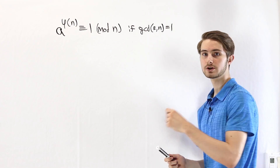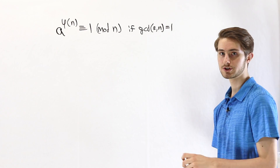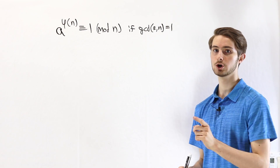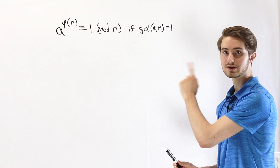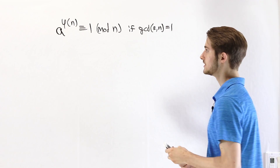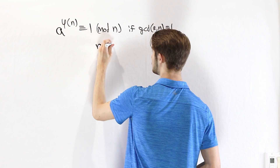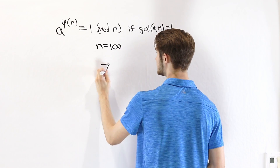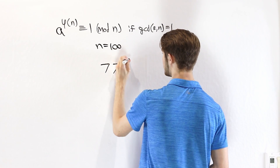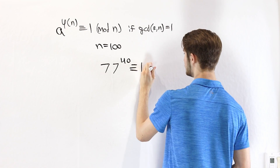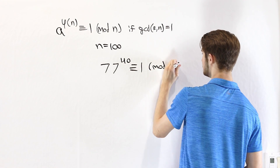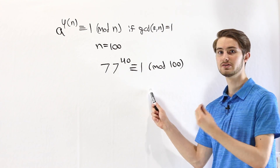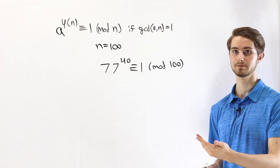Here φ(n) is Euler's Totient function, so it counts the number of integers from 1 to n that are coprime to n. As an example of this theorem, if we choose n = 100, then you can prove that 77 to the power of 40 is congruent to 1 mod 100. This statement is an example of applying Euler's Theorem.